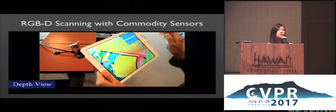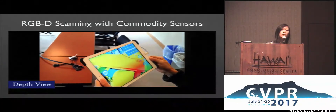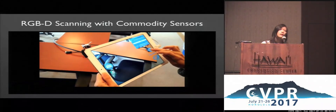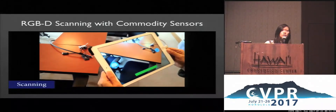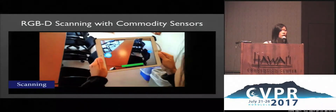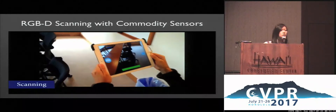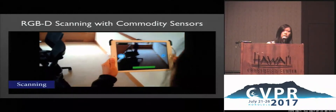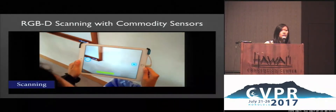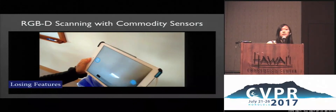Here, we can see our RGBD scanning framework. We have a depth view and a color view. As the user begins scanning, you can see a feature bar on the bottom that indicates the featurefulness of the current view, which provides a rough measure of tracking robustness for novice users.